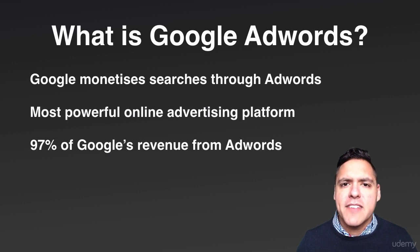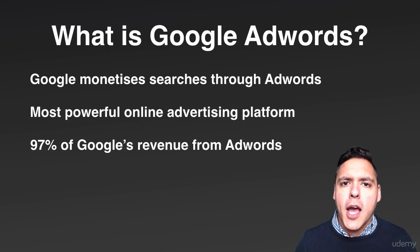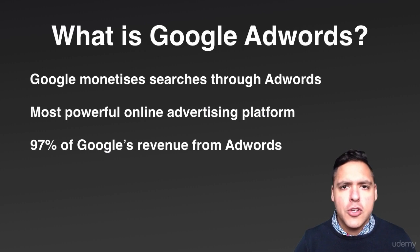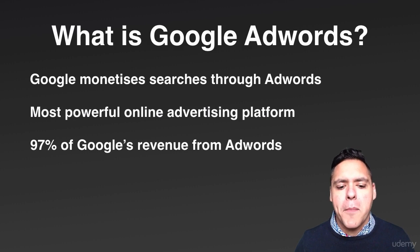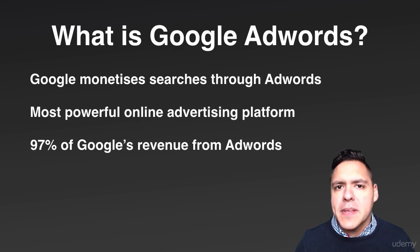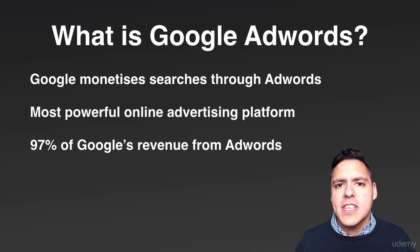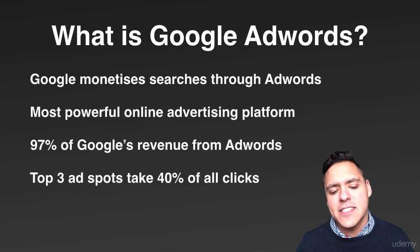97% of Google's overall revenue comes from Google AdWords. When you consider that they've got YouTube, Gmail, Google Plus, and so many companies and apps under the Google umbrella, the fact that 97% of revenue comes from Google AdWords gives you an indication of how big a business it is.